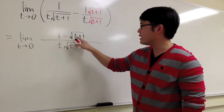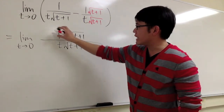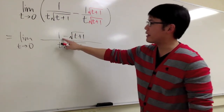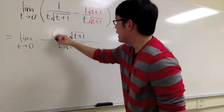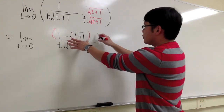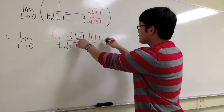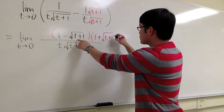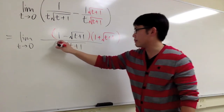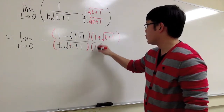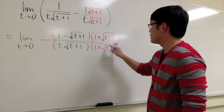I have 1 minus a square root on top, so let me multiply the top and bottom by the conjugate of the top — namely, 1 plus square root of t plus 1. And I will multiply the bottom by the same thing: 1 plus square root of t plus 1.